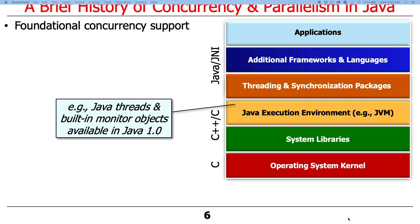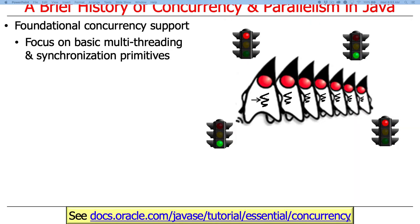Going back to the beginning of Java: Java came out in the mid-1990s, and when it was first released as Java 1.0, it started out with some foundational concurrency support. It had support for threads, which is what we're focusing on in the first part of this course, and support for something called built-in monitor objects. The focus was on very basic multi-threading and synchronization primitives — the core things you'd expect to find programming at or just above the operating system level.